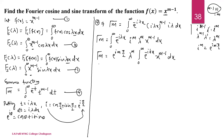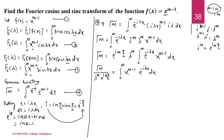Dividing both sides by lambda raised to m and e to the power i m pi by 2, we get: gamma of m divided by (lambda raised to m times e to the power i m pi by 2) equals the integral from 0 to infinity of x to the power m minus 1 times e to the power minus i lambda x dx. Note that 1 over e to the power i theta equals e to the power minus i theta, and the conjugate of e raised to i theta is cos theta minus i sin theta, which equals e to the power minus i theta.